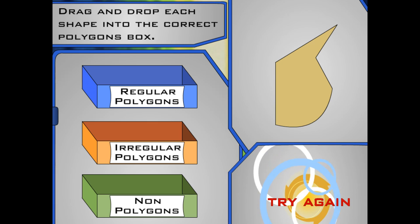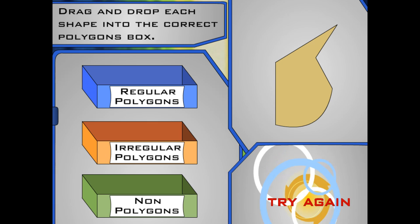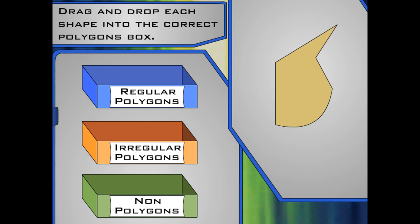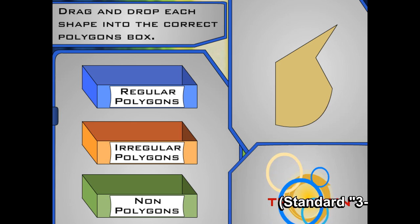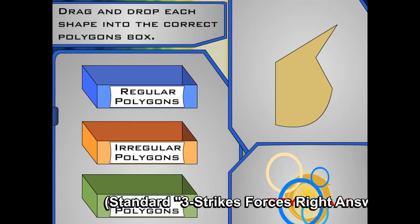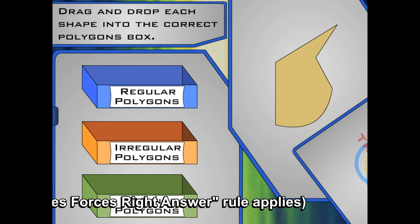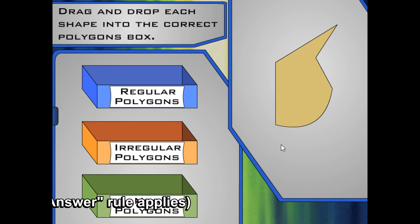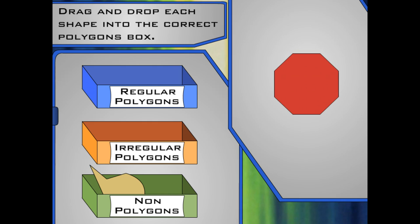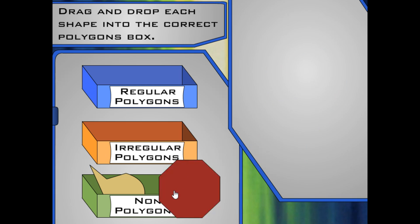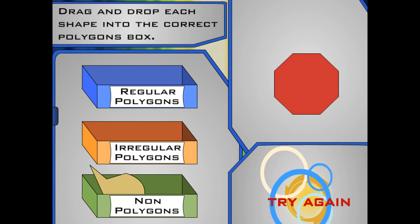Remember, polygons need to be closed figures. They are made up of line segments, not curves. Remember, polygons where the sides are the same length and angles are the same measurement are called regular polygons.